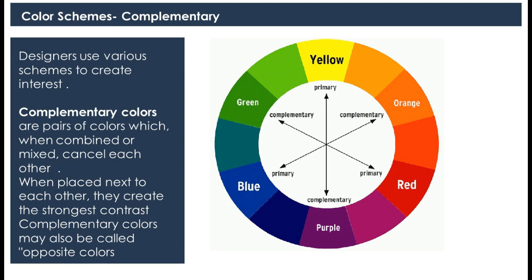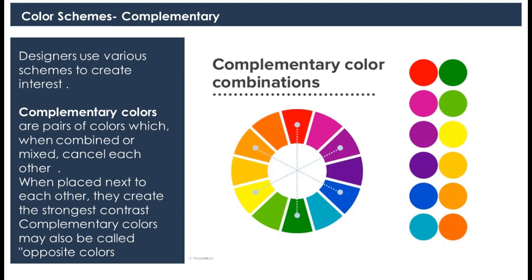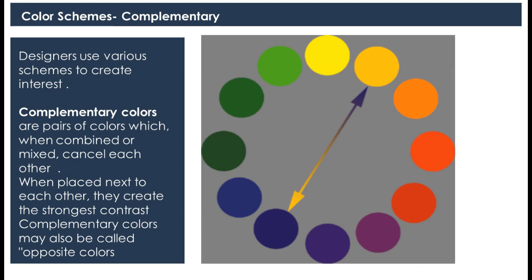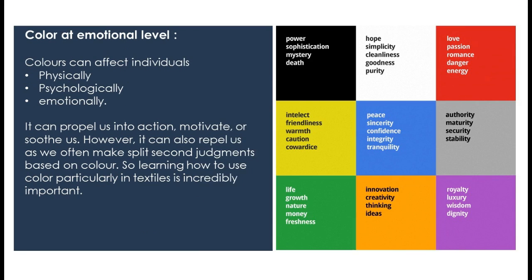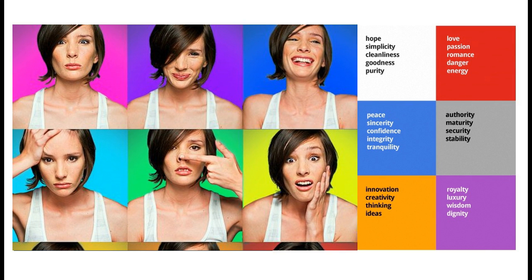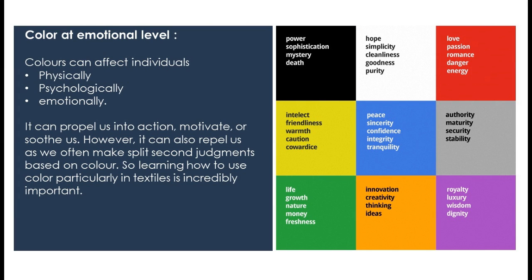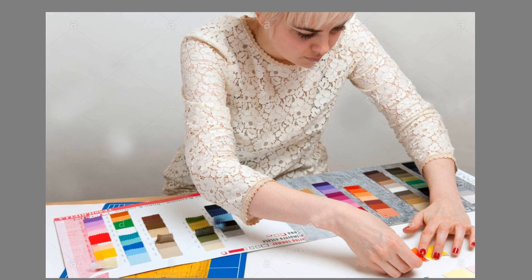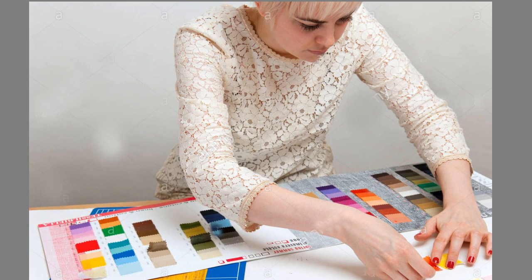Designers use various color schemes to create interest. One of these is called complementary colors — colors which when combined or mixed cancel each other out. They are also called opposite colors. When placed next to each other, they create the strongest contrast. Colors affect individuals physically, psychologically, and emotionally. They can propel us into action, motivate or soothe us, and can also repel us as we often make split-second judgments based on color. Learning how to use color, particularly in textiles, is incredibly important.